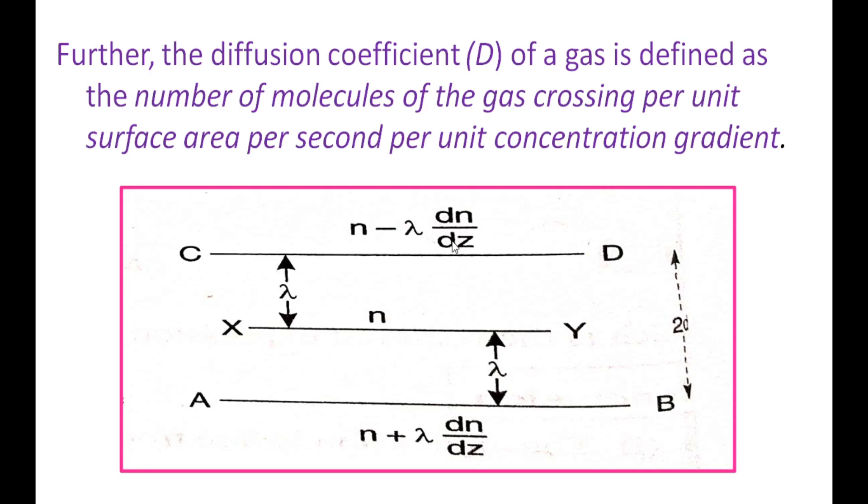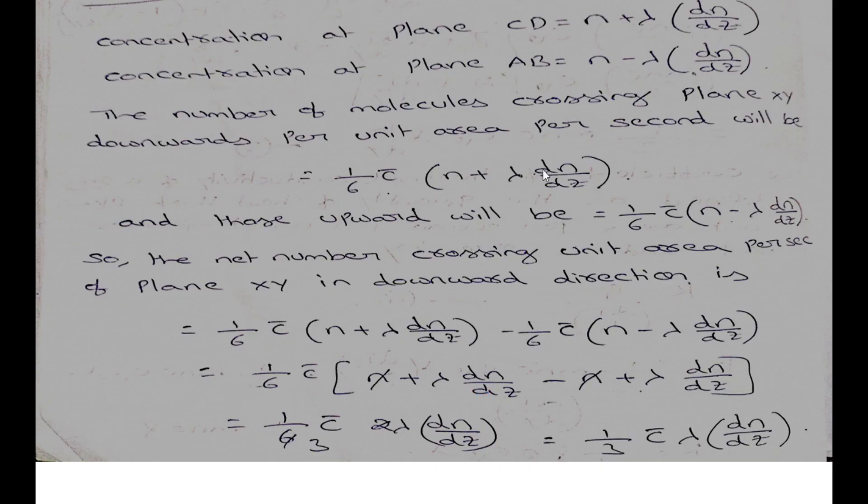So in equilibrium, the gas molecules will cross the plane XY. Molecules move from AB to CD and CD to AB. In order to bring the equilibrium, the molecules of the gas will cross the plane XY from AB to CD and CD to AB. This phenomena is called diffusion.